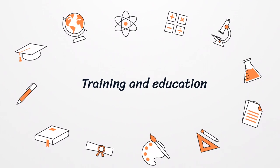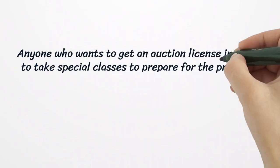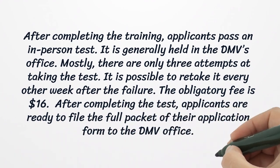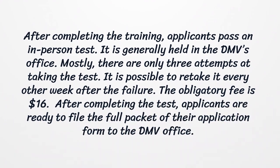Training and Education. Anyone who wants to get an auction license in CA is to take special classes to prepare for the process. The classes are mainly online, with an option of choosing classes with an instructor or without one, joining the training on your own time. After completing the training, applicants pass an in-person test, which is generally held at the DMV's office. There are only three attempts at taking the test, and it is possible to retake it every other week after a failure. The obligatory fee is $16.